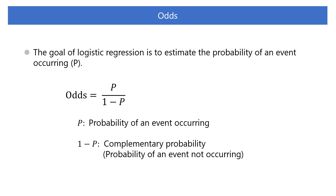The ratio of p to 1 minus p is called odds. In other words, odds is the probability that an event will occur divided by the probability that it will not occur.